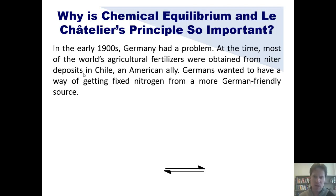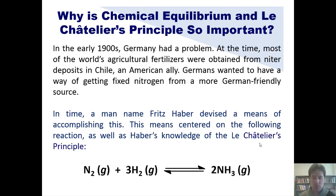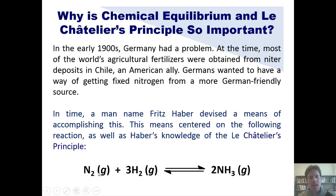In the early 1900s, Germany had a problem. At that time, most of the world's agricultural fertilizers were obtained from niter deposits in Chile, which was an American ally. Germans wanted to come up with a way of getting fixed nitrogen from a more German-friendly source. A man named Fritz Haber devised a means of accomplishing this, centered on the following reaction and his knowledge of Le Chatelier's principle. If you have nitrogen gas N2 and hydrogen gas in a closed vessel, they will eventually reach a state of equilibrium forming NH3 ammonia — a useful form of fixed nitrogen. The problem is that this equilibrium reaction strongly favors the left side, so once it reaches equilibrium, there's only a tiny, tiny amount of NH3 and a huge amount of reactant.